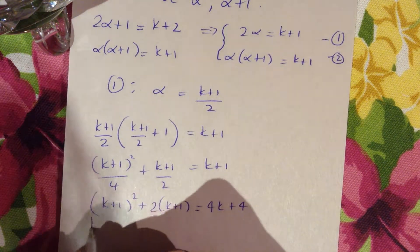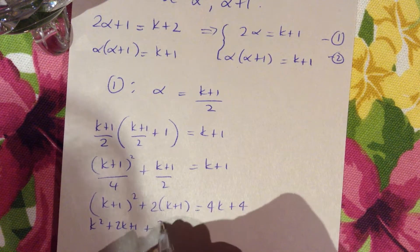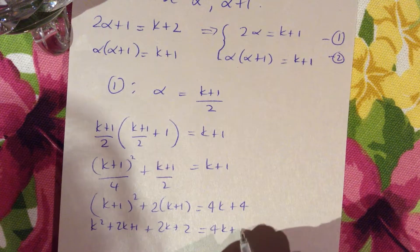Expand the brackets: k² + 2k + 1 + 2k + 2 = 4k + 4.